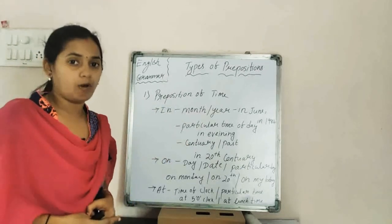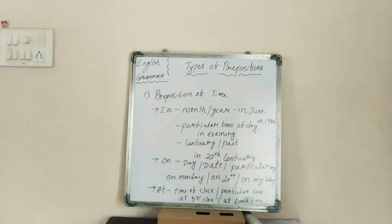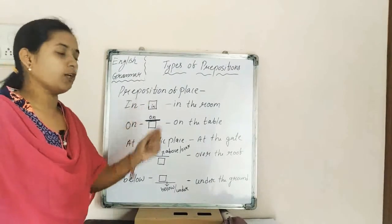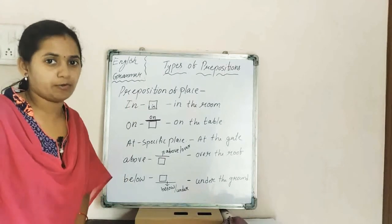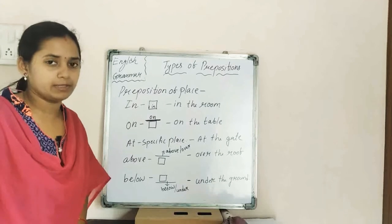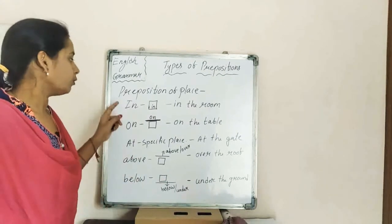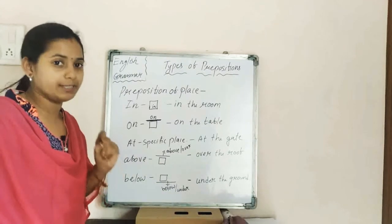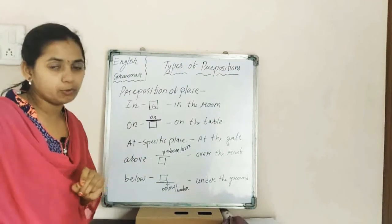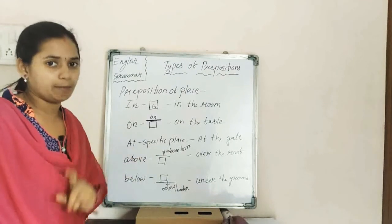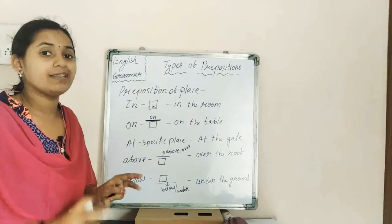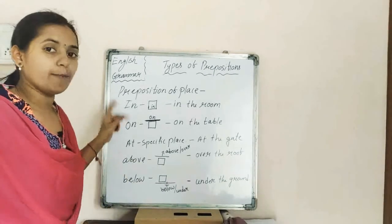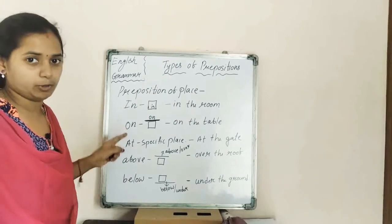Now moving to the second type: preposition of place. It explains the place of the noun with respect to another thing or person. The basic prepositions of place are: in, on, at, above, and below. Note that in, on, and at can be used as both time and place prepositions. According to the use in the sentence, you have to determine whether it refers to time or place.